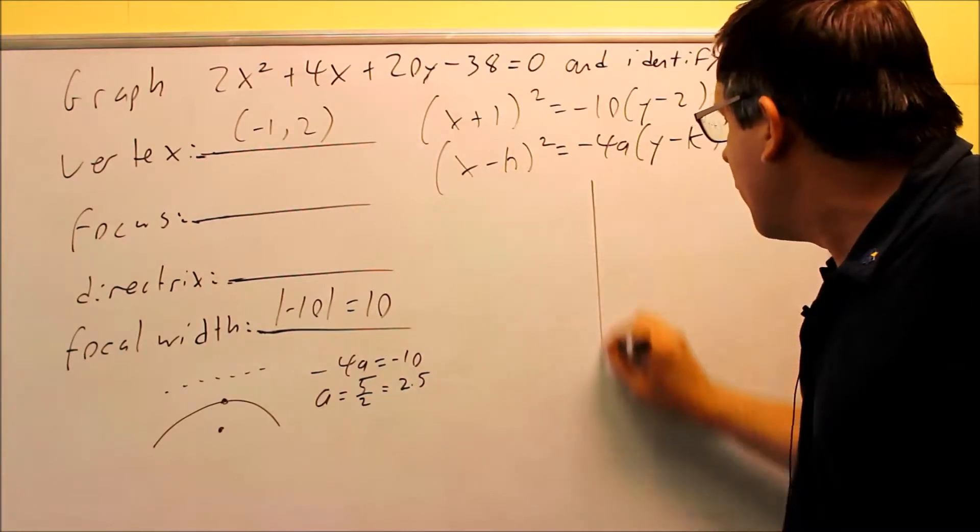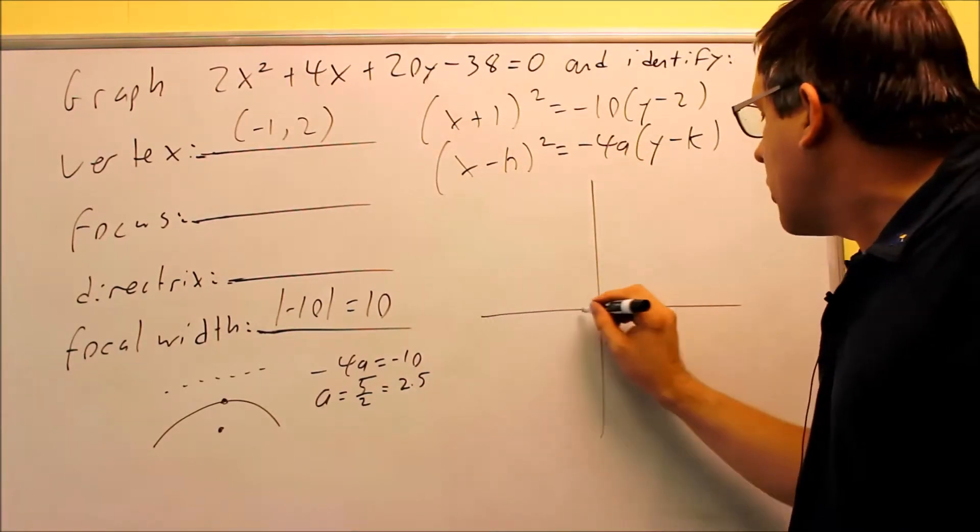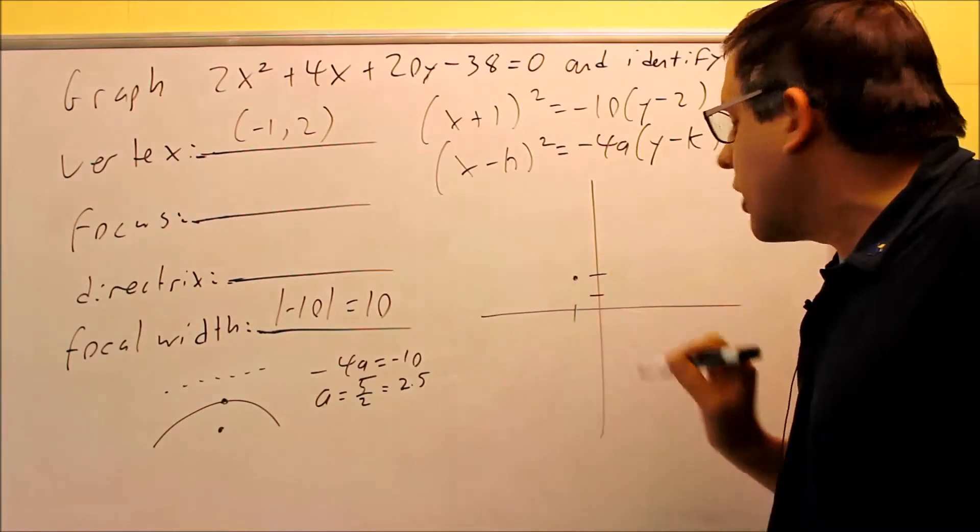We're still going to start with your vertex. The vertex is going to be negative 1, 2, so we start by plotting that one. That's right here, negative 1, 2.